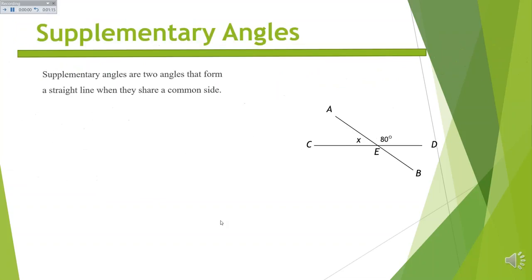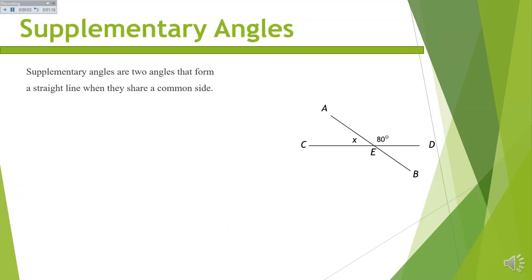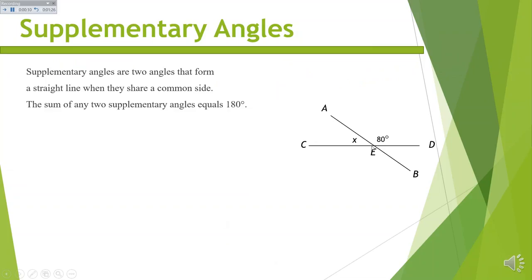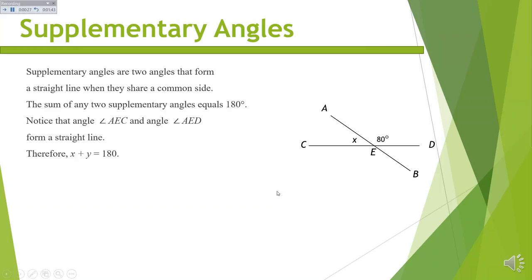A supplementary angle is formed when you have a common side, and those two supplementary angles add up to 180. You've got a straight line which is 180 degrees, and then you have a line that divides that. So if this angle were 80, then the remaining part would be 100. Of course it doesn't look like it's drawn to scale, but you're often going to see things not drawn to scale on the SAT.